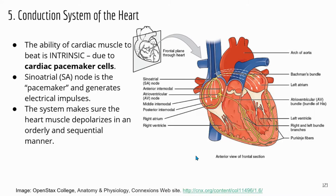The heart is a very fascinating organ. The cardiac muscles can beat on their own — that's why we call it intrinsic. That's because the heart has its own pacemaker cells. It does not need to receive signals from the brain like skeletal muscles. The cardiac muscle cells can beat on their own. Now let's look at the conduction system and how the heart has the ability to beat on its own.